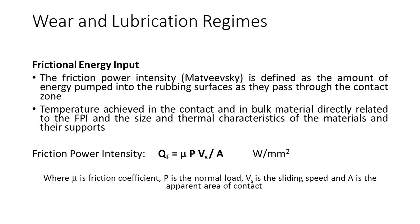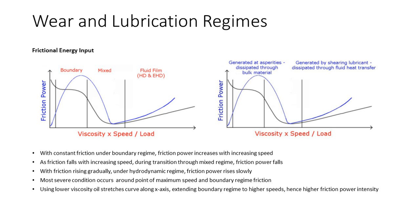The time scale clearly has implications for the amount of damage caused to the contact. If we superimpose a friction power curve on our Stribeck curve, with fairly constant friction under the boundary regime, friction power increases with increasing speed. As friction falls with increasing speed during transition through the mixed regime, the friction power falls. With friction rising gradually under the hydrodynamic regime, friction power rises steadily from a low value. The most severe condition in terms of frictional energy input occurs somewhere around the point of maximum speed and maximum boundary regime friction.